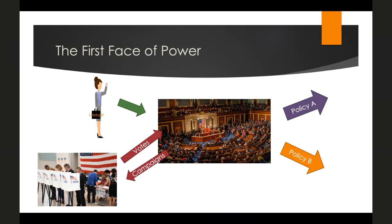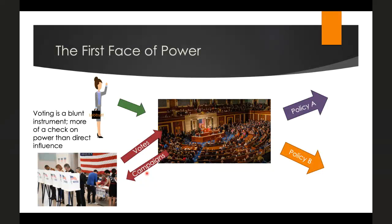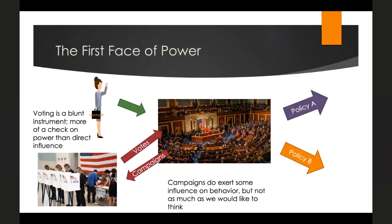We can add nuance to our first face of power picture: the resources are votes and campaigns. The proximate goal of every sitting representative or senator is to get re-elected, and voters hold that resource — so they can influence candidates that way. But campaigns also try to influence voters. Voting itself is a blunt instrument — it doesn't tell representatives how to vote on every issue; it's more of a check on power than a direct influence.